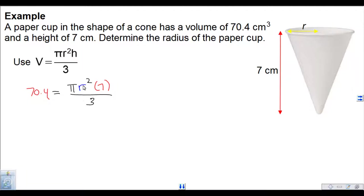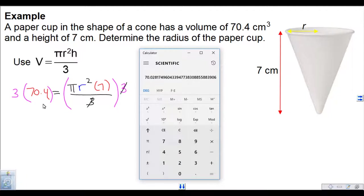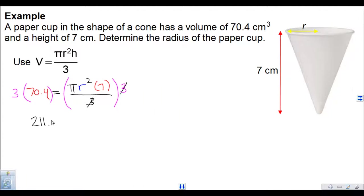We've got to isolate r. I'll deal with the denominator first — to get rid of any denominator, we multiply. So we multiply by 3 on both sides. The 3's divide out, and I need to figure out what 3 times 70.4 is — that's 211.2. And that's equal to pi r squared times 7.